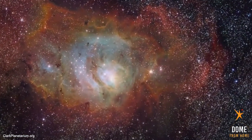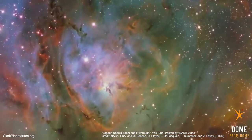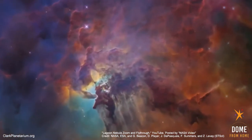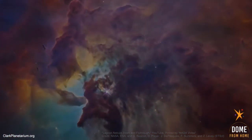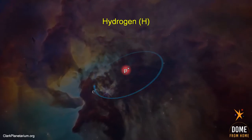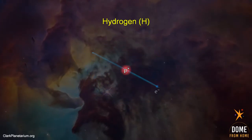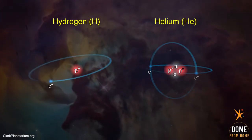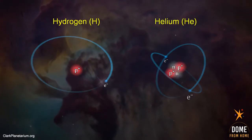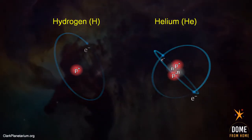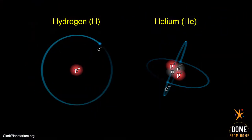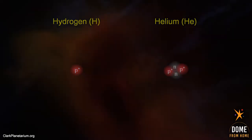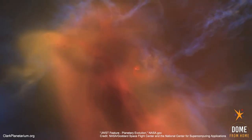One example is the famous Lagoon Nebula in the direction of the constellation Sagittarius. This type of nebula is made up of mostly hydrogen and helium. Hydrogen is the simplest atom, consisting of one proton and one electron. Helium is the next simplest atom — it has two protons, two neutrons, and two electrons. Protons and neutrons reside at the center of atoms, called the nucleus, and electrons surround the nucleus.